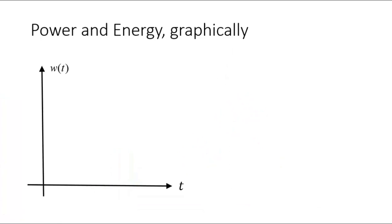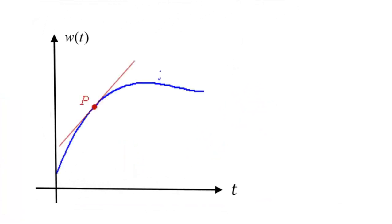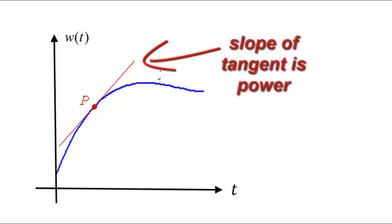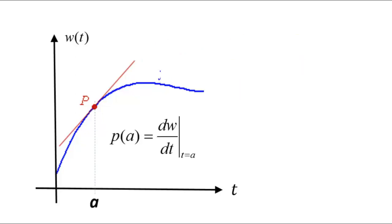Now, for power and energy. Let's say we have the energy w that has flowed through a point in our system. Perhaps it is the energy that has been absorbed by a customer or the energy that has been produced by a generator. Well, the slope of the tangent of that curve at any point in time is no other than the power. At t equals a,